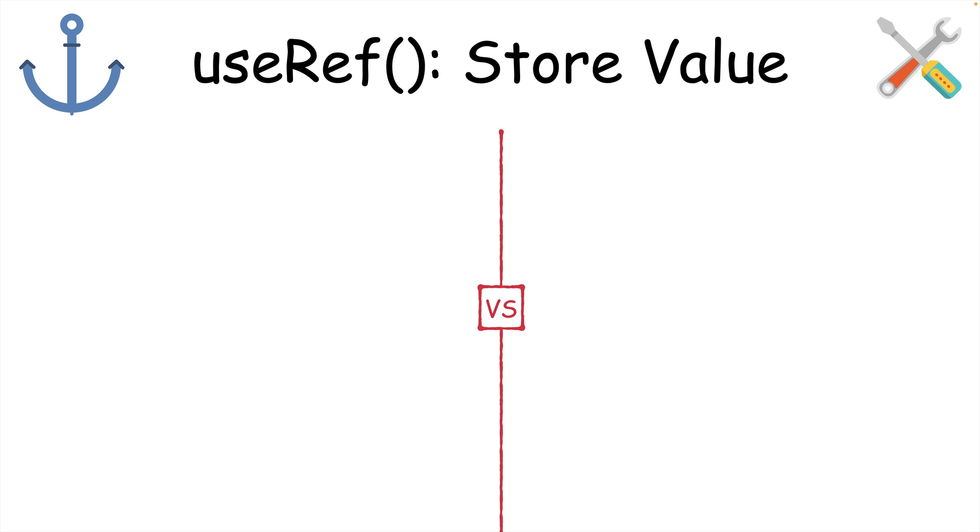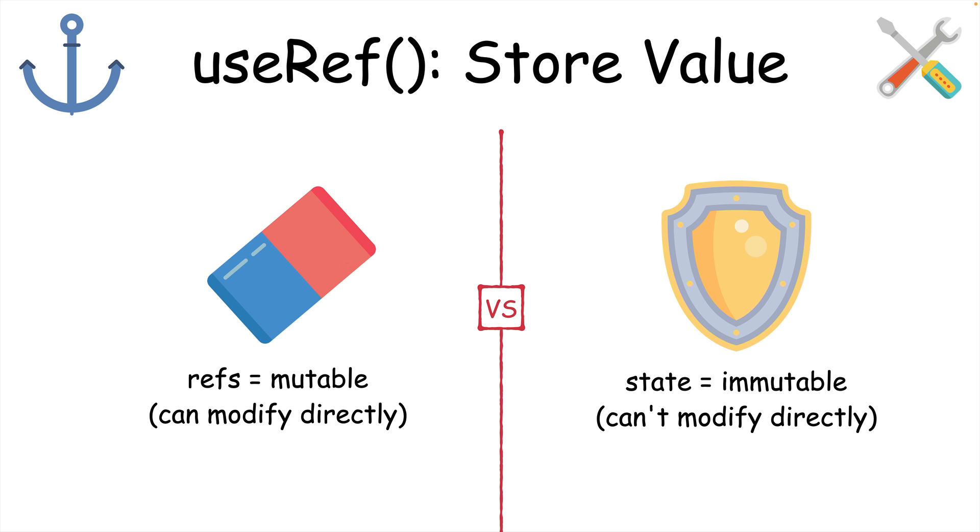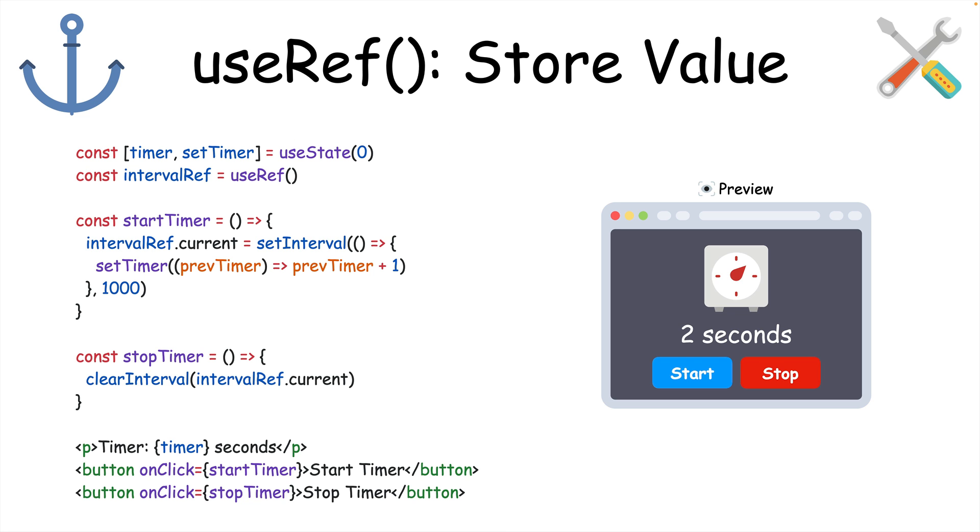Another important difference between refs and state is that refs are mutable, while state is immutable. This means the current property can be modified directly using the equals operator. This is really useful in this timer example, where we're storing the interval ID in a ref to clear the interval when we want to using the stopTimer function.